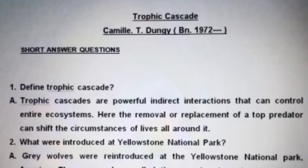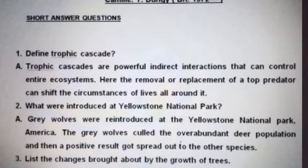The first question is: define Trophic Cascade. The answer is: Trophic Cascades are powerful indirect interactions that can control entire ecosystems. Here the removal or replacement of a top predator can shift the circumstances of lives all around it.